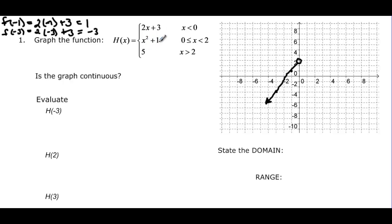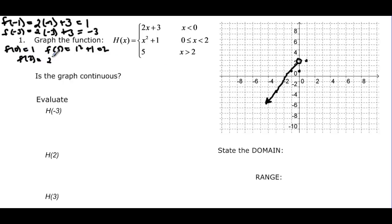The second piece is x squared plus 1, for x between 0 and almost 2. f(0) equals 0 squared plus 1 equals 1, so (0, 1) is included. f(1) equals 1 squared plus 1 equals 2, so (1, 2) is on the graph. f(2) equals 2 squared plus 1 equals 5, so (2, 5) would be the endpoint, but it's an open circle because 2 is not included. The graph goes from (0, 1) up to that open point — just a little piece of the parabola.